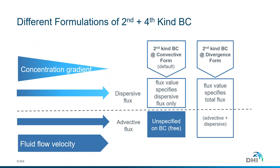In conclusion, if you are working with second and fourth type boundary conditions corresponding to fluxes, you need to be aware of the different formulation of these boundary conditions depending on whether you choose convective or divergent form. In the convective form, the boundary value specified for the second or fourth type corresponds only to the dispersive flux. In the divergent form, this boundary value corresponds to the total flux — both advective and dispersive.